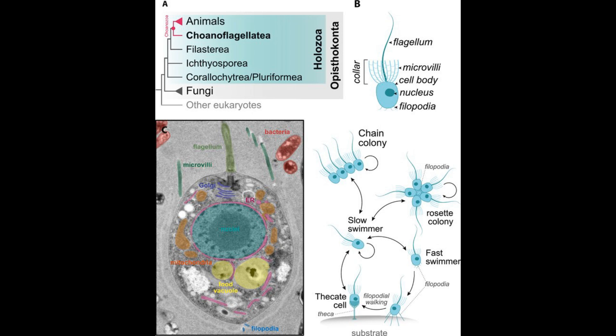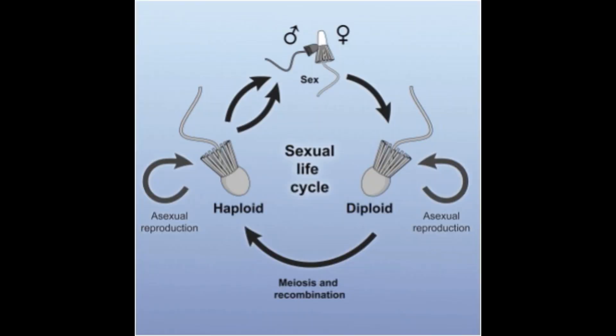All choanoflagellates are covered by an extracellular matrix called the periplast, and the makeup of the periplast is diagnostic to the family level. In addition, choanoflagellates are covered in a glycocalyx — fine fibrils that coat the outer surface of the cell. Many choanoflagellates have a theca, which is a cup or vase-shaped structure that surrounds the cell, and a stalk that anchors to the substrate. The basis of both the theca and stalk appears to be carbohydrate fibrils embedded in an amorphous matrix. Reproduction in choanoflagellates appears to alternate between sexual and asexual reproduction, which is common for many protozoans.